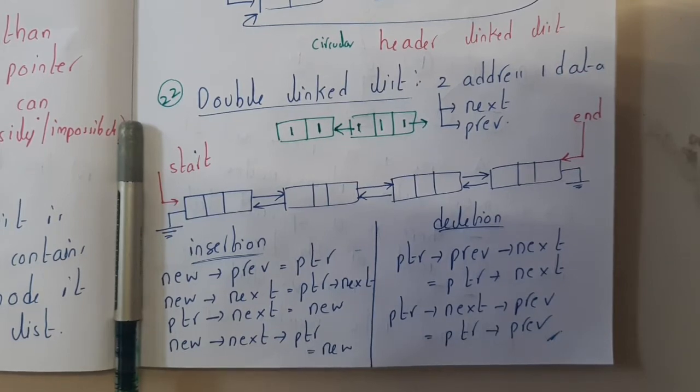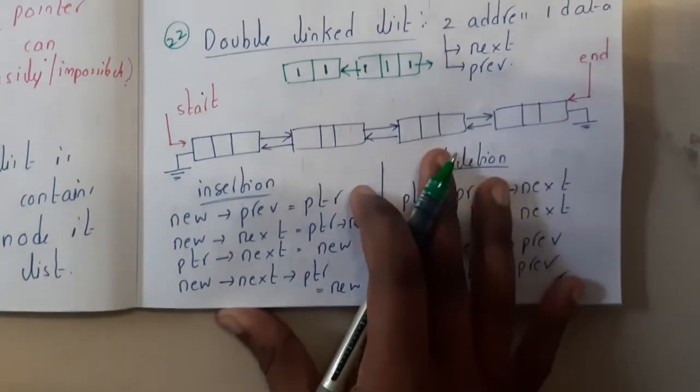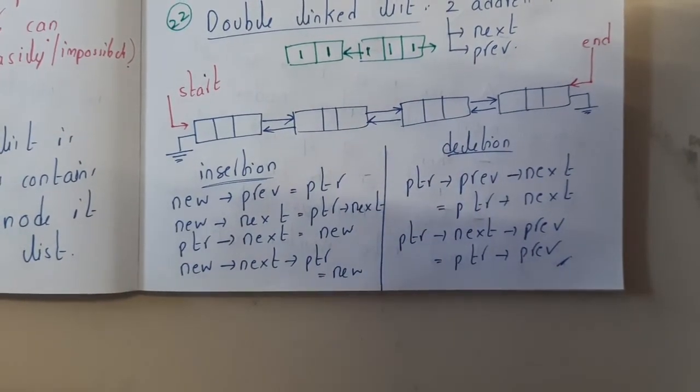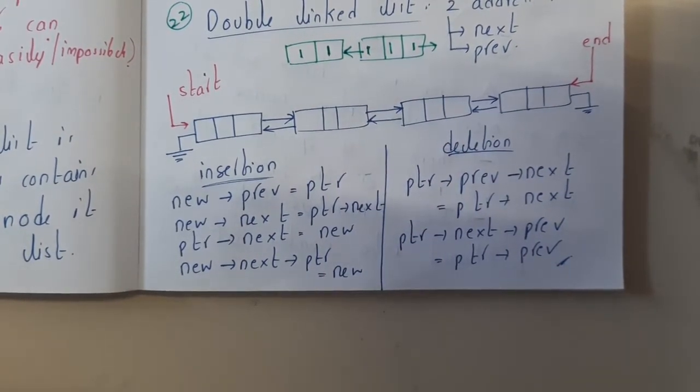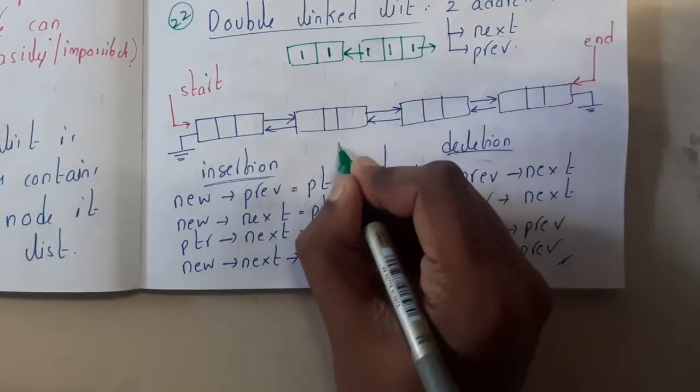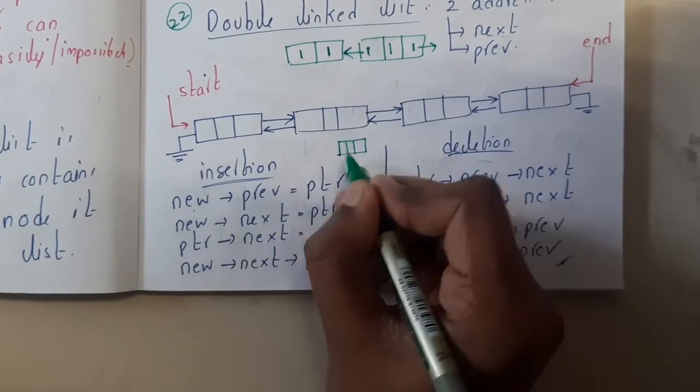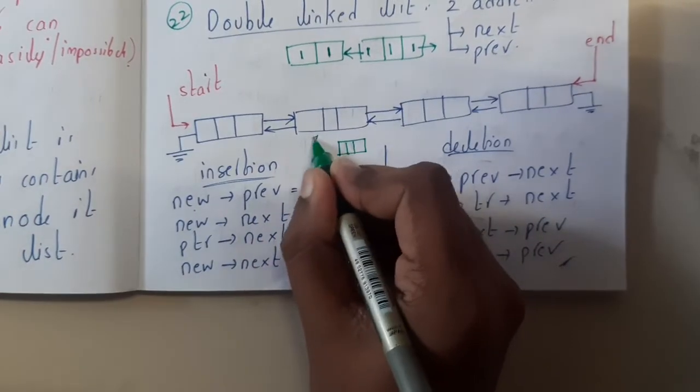Your question will be, how can insertion be done? If I want to insert a new element, how can I insert that element? So let us create a small node here. New node's previous will be connecting it to ptr, so assume that this is pointing to ptr.